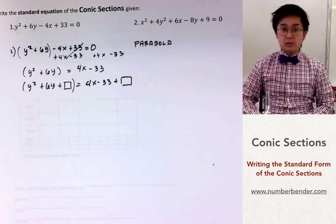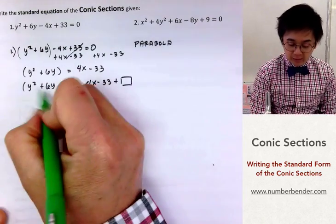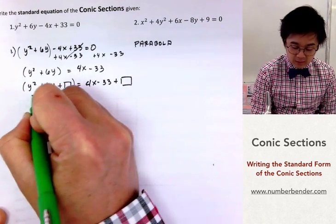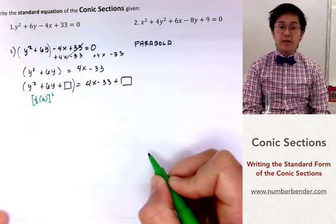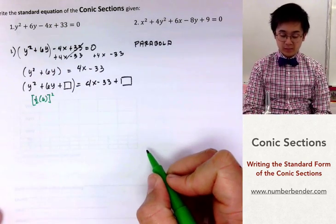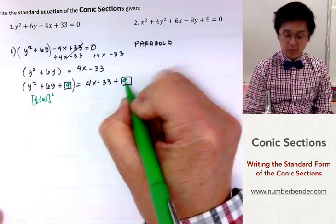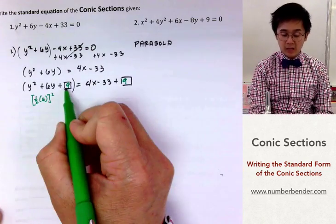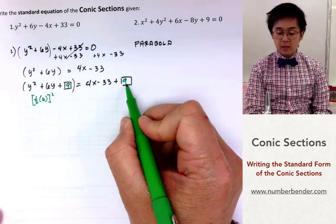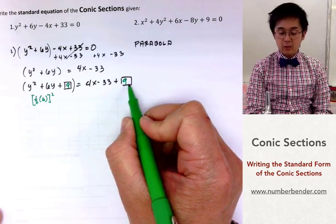To complete the square we need to take half of 6 and square it. Half of 6 is 3 and 3 times 3 is 9. So the number that will complete the square is 9, so if we add 9 on the box we're going to add 9 on the other side of the equation as well.